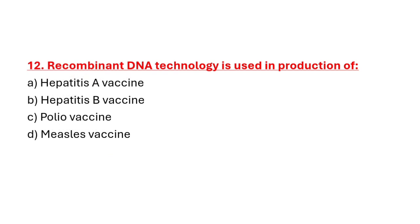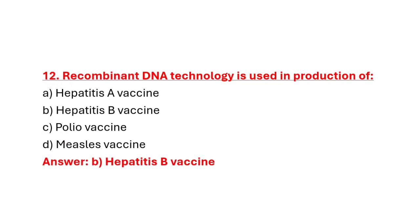Question 12: Recombinant DNA technology is used in the production of. Option A: Hepatitis A vaccine. Option B: Hepatitis B vaccine. Option C: Polio vaccine. Option D: Measles vaccine. Correct answer is Option B: Hepatitis B vaccine.